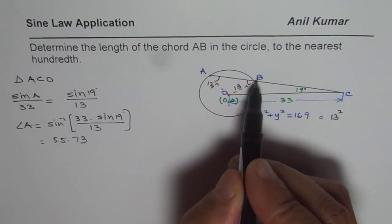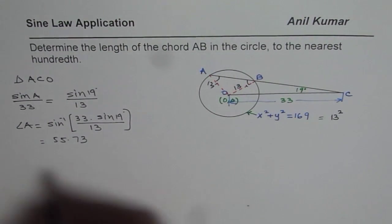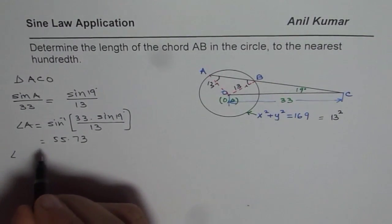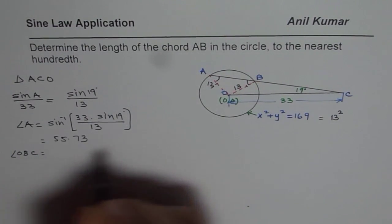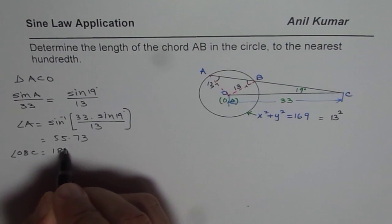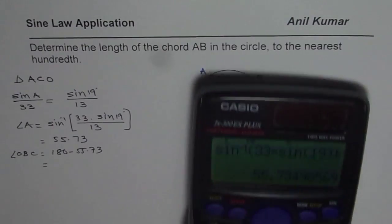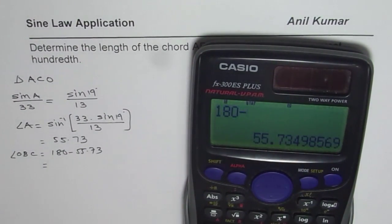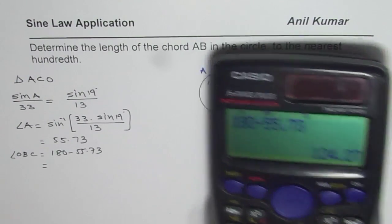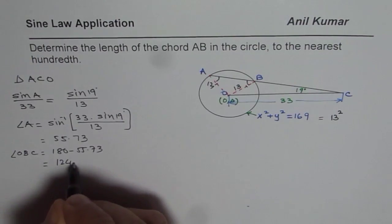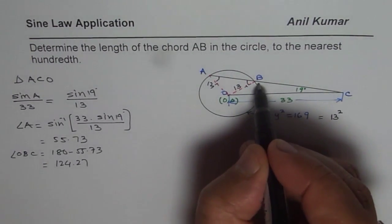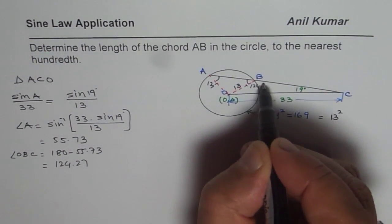Since the triangle is isosceles we know that angle B is also 55.73 and that gives us the angle ABO. So the angle ABO is equal to 180 minus 55.73 minus 55.73. So that is equal to 180 minus 111.46, that is equal to 68.54. So we know this angle is 68.54.